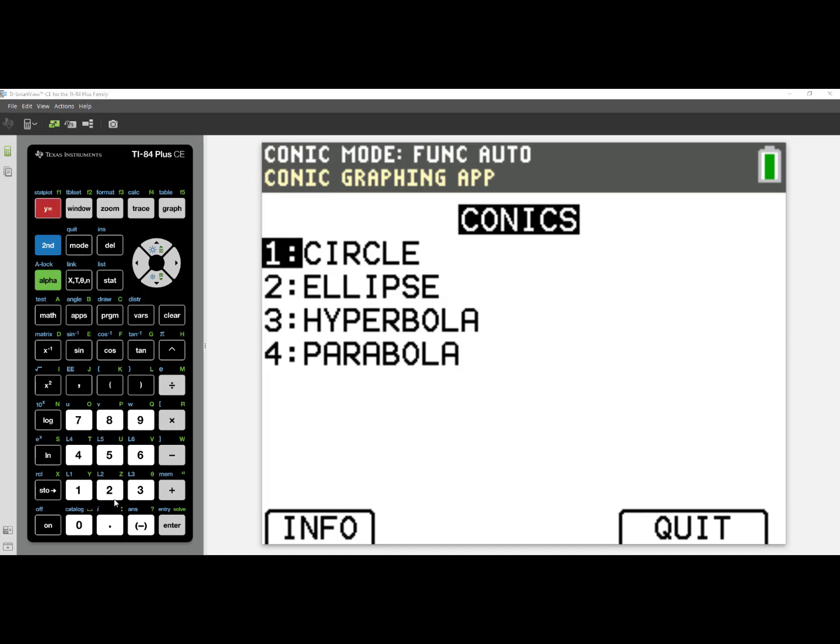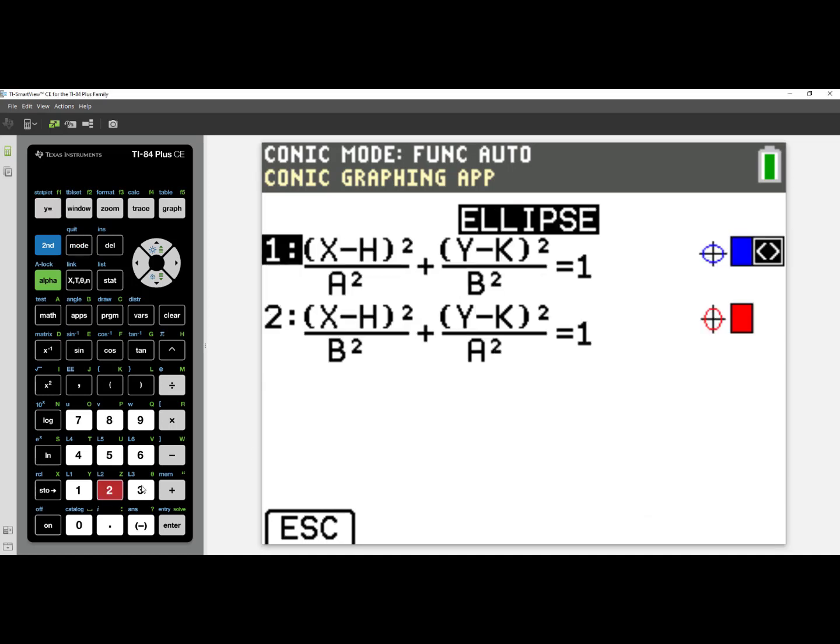Let's now select number two, Ellipse. You can see that 1 and 2 look very similar, yet notice that the a squared and b squared are changed in the formulas. Look at how it's depicted over here on the right. This ellipse is stretched horizontally, while this ellipse is stretched vertically.